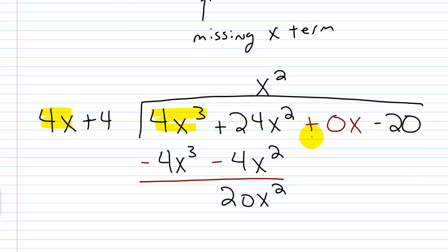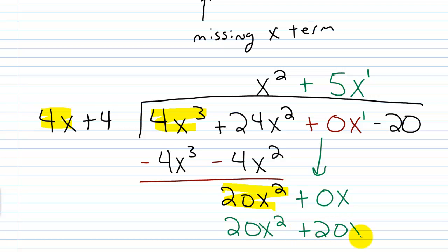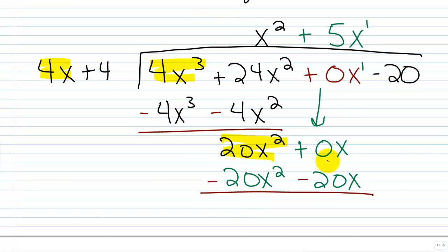Now I want to bring down this next term, which is plus 0x. We do leading term into leading term: 4x into 20x squared. Think about 20 divided by 4 — that's 5, and x squared over x is x, so 5x goes right here in the x position, respecting place value. Now we multiply: 5x times 4x gives me 20x squared, and 5x times 4 gives me 20x. We're subtracting this away, so we change the sign of each term. Adding: 20x squared minus 20x squared is 0, and 0x minus 20x gives me negative 20x.